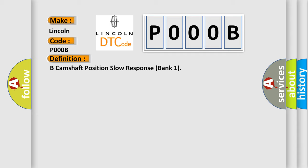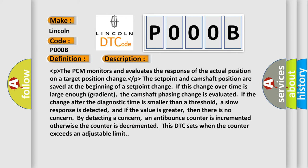And now this is a short description of this DTC code. The PCM monitors and evaluates the response of the actual position on a target position change. The set point and camshaft position are saved at the beginning of a set point change if this change over time is large enough gradient. The camshaft phasing change is evaluated if the change after the diagnostic time is smaller than a threshold.